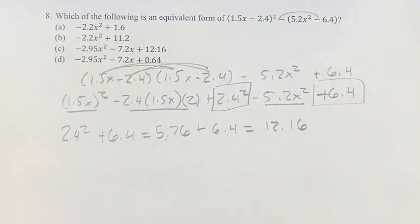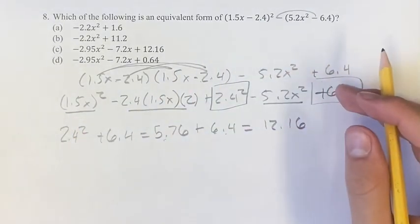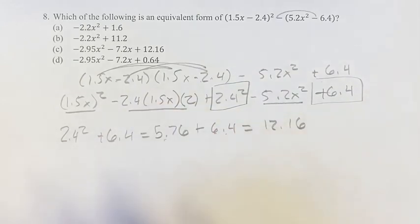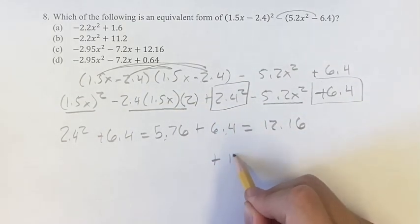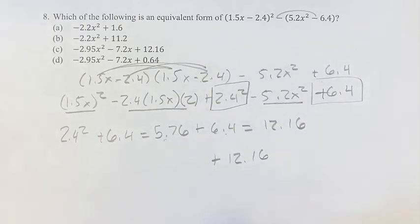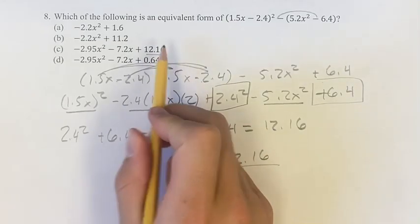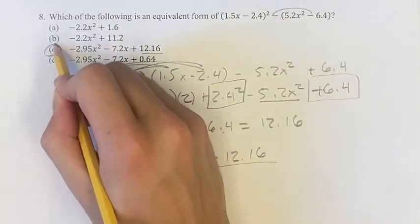And so we know, whatever the x squared term is, whatever the x term is, we don't have to calculate that. We just know our answer is going to have plus 12.16 at the end. And there's only one of these out of our options that has that, so we know c must be the answer.